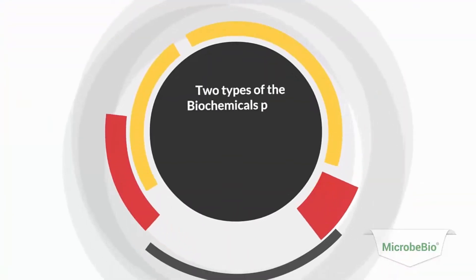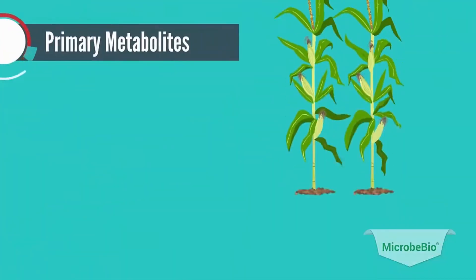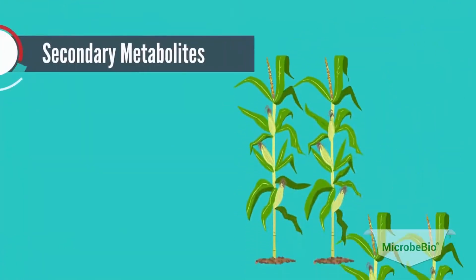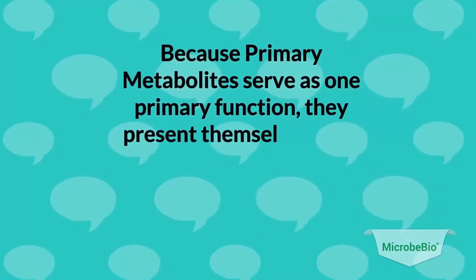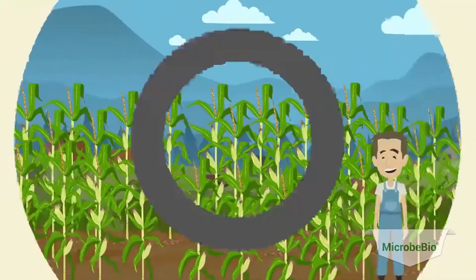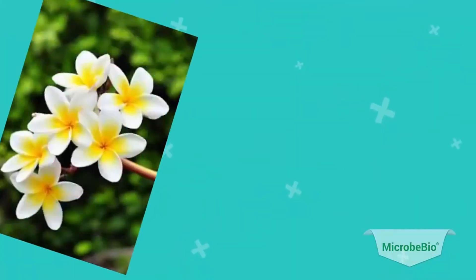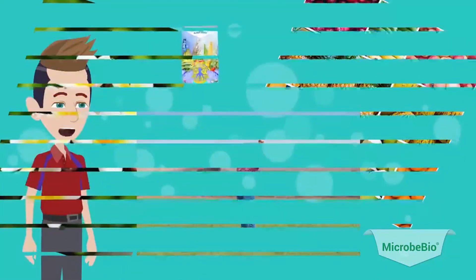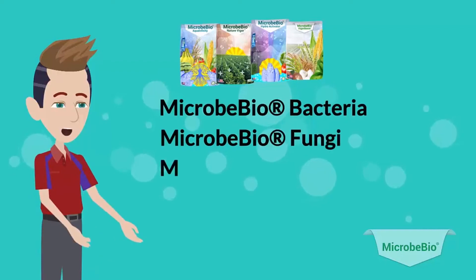Two types of biochemicals plants create are called primary metabolites and secondary metabolites. Primary metabolites are created and used by plants to aid in both growth and development, and present themselves in all plants. Secondary metabolites are unique and the functions they serve differ between specific types of plants. Secondary metabolites can affect important aspects such as the smell of flowers, flavors of fruits, and most importantly, the health of the soil.